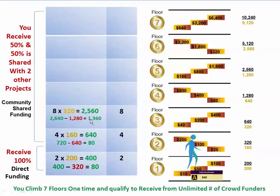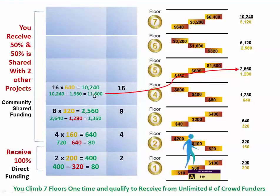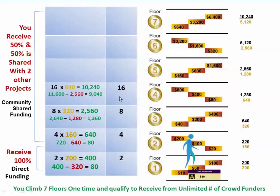Take it one more level up — these eight project managers, when they find two each, give you a potential of 16 project managers on your fourth level. Half of the fourth floor value is $640, so when these 16 project managers fund their whole floor, you have a potential of $10,240 coming into your project. Adding the $1,360 carried over adds up to $11,600 potential. If you step up to the fifth floor and share the $2,560 there, that leaves you $9,040 towards your project after you've funded the fifth floor.